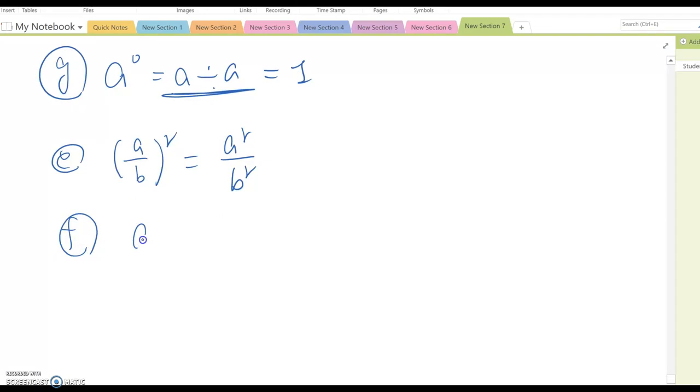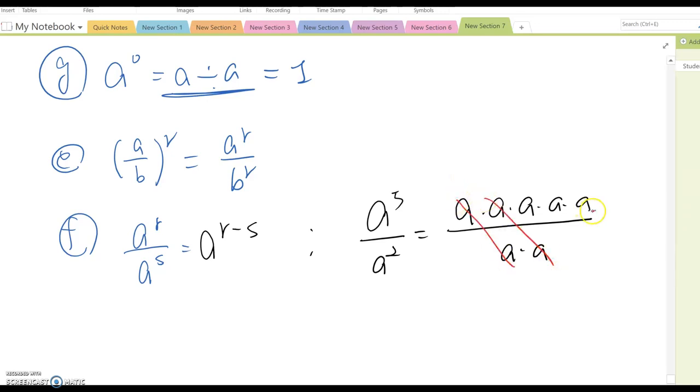Then, property F, A to the R over A to the S, which is A to the R minus S. So, for example, maybe A fifth over A squared, then become 1, 2, 3, 4, 5 A over 1, 2. So, as you see, the common A cancels out. So, 3 left here. Then, what is the shortcut? So, you subtract this from 5. So, in this case, A to the 5 minus 2 becomes A to the third power.